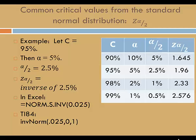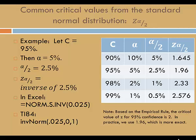Here's a table with critical values that correspond to the most common confidence levels. Note that based on the empirical rule, the critical value of z for 95% confidence is 2.